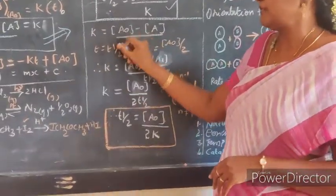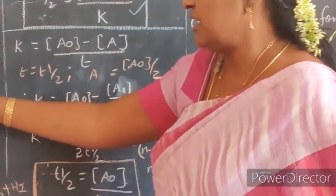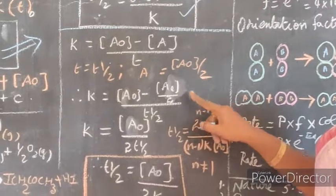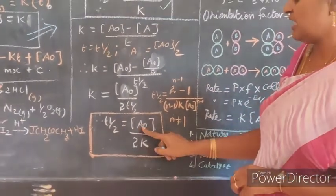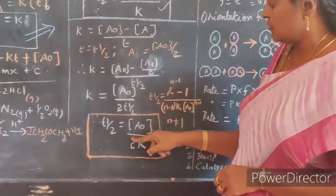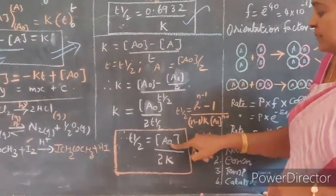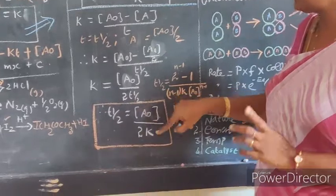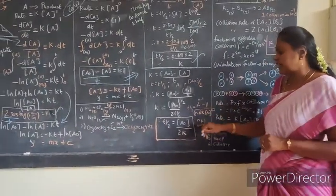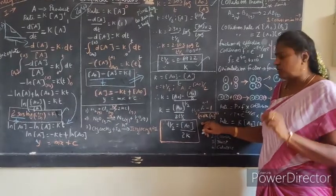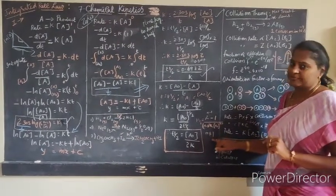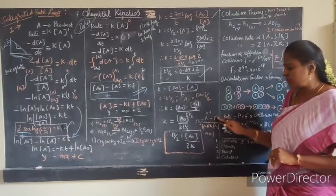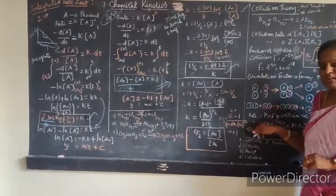Next, the half-life for zero order reaction. Taking K equals (A₀ minus A) divided by T, and substituting T as T½ and A as A₀/2, we get T½ equals A₀ divided by 2K. The difference between these two: for zero order, T½ depends on initial concentration, whereas for first order, half-life does not depend on initial concentration. For the general Nth order reaction (where N ≠ 1), the formula is T½ equals (2^(N-1) minus 1) divided by (N-1) times K times A₀^(N-1).